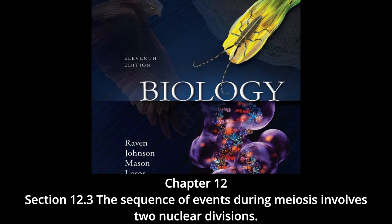Telophase one: by the beginning of telophase one, the chromosomes have segregated into two clusters, one at each pole of the cell. The nuclear membrane reforms around each daughter nucleus. Because each chromosome within a daughter nucleus replicated before meiosis one began, each now contains two sister chromatids attached by a common centromere. Importantly, the sister chromatids are no longer identical because of the crossing over that occurred in prophase one.